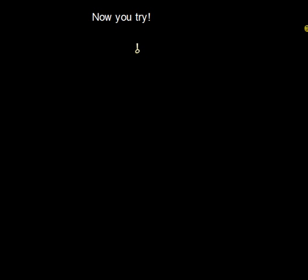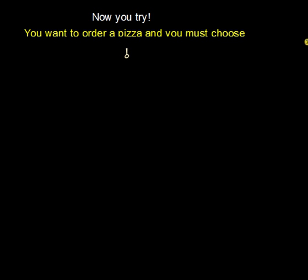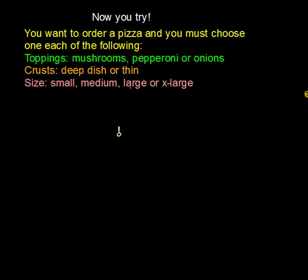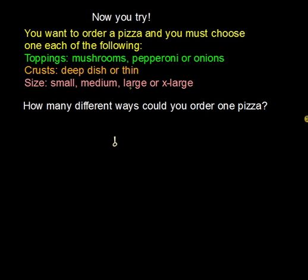The best way to get a feel for this counting is to try it yourself. Here's an example: you want to order a pizza and must choose one each of the following. Toppings: mushrooms, pepperoni, or onions. Crust: deep dish or thin. Size: small, medium, large, or extra large. How many different ways could you order one pizza? Think about what the events are and how many outcomes there are for each event.